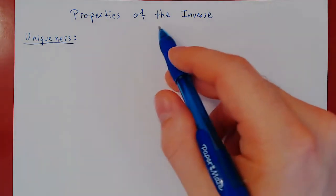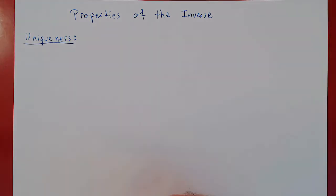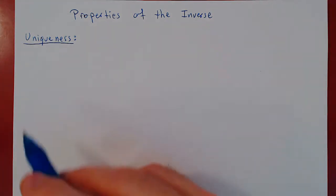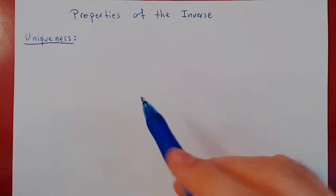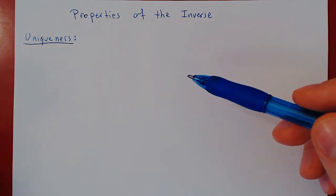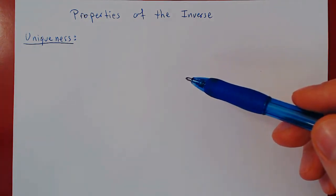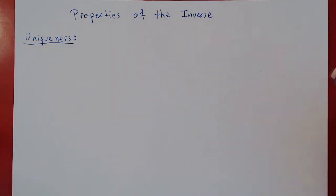That's why we can say 'the inverse of A' and not just 'A inverse.' How do you prove uniqueness? The idea is: assume that there are two such objects and prove that they have to be the same. And this proves uniqueness.